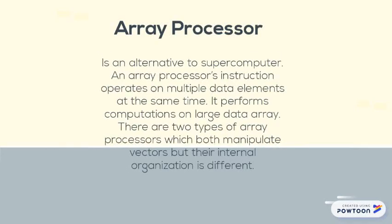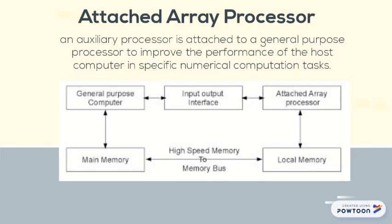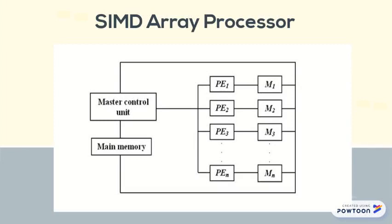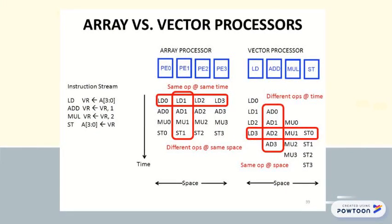An array processor is an alternative to a supercomputer. An array processor's instruction operates on multiple data elements at the same time and performs computations on large data arrays. There are two types: the attached array processor, which is an auxiliary processor attached to a general-purpose processor to improve performance in specific numerical computation tasks; and the SIMD array processor, a computer with multiple processing units operating in parallel. These two types both manipulate vectors but have different internal organization.